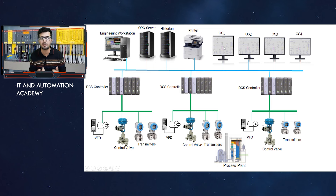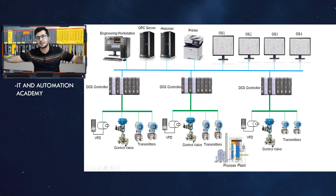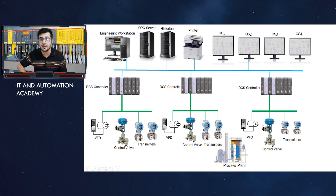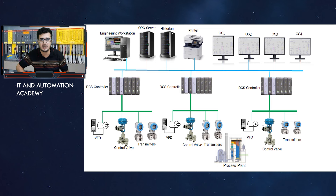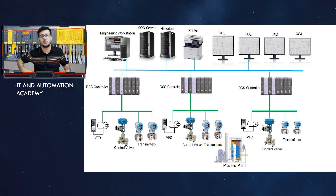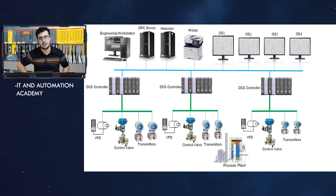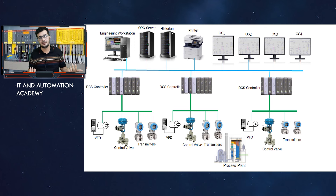The engineering workstation is different from the operator screens — I will talk about that in detail in coming sessions. The engineering workstation is where you create the graphics and configure the system. Then there is the historian. Normally, DCS systems have limited onboard storage, so you cannot retrieve historical data. For example, if I want to know what the temperature value was three years ago or even yesterday, without a historian I cannot store or retrieve that data. The historian stores all your historical data so you can go back in time.